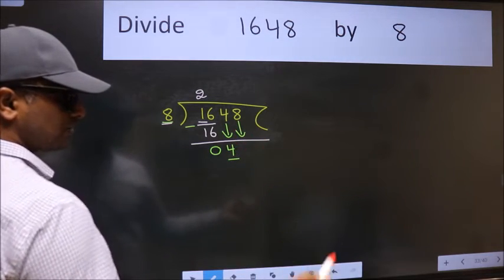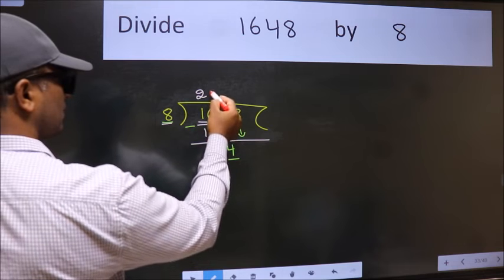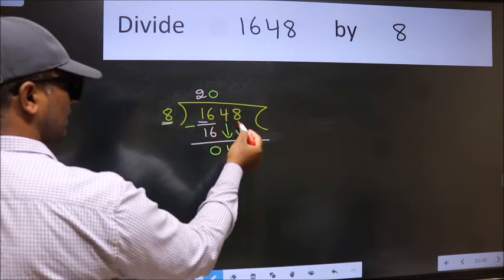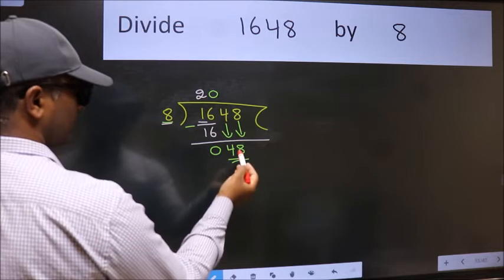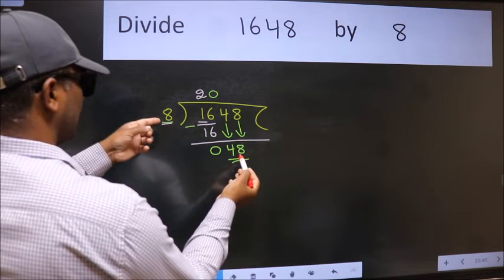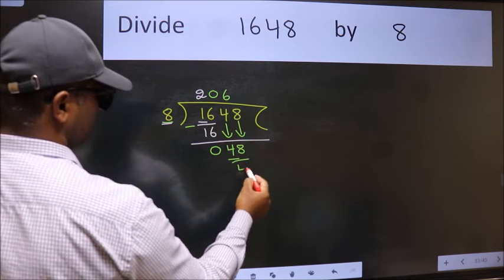And the rule to bring down the second number is put 0 here. Then only we can bring this number down. So 48. When do we get 48 in the 8 table? 8 times 6 is 48.